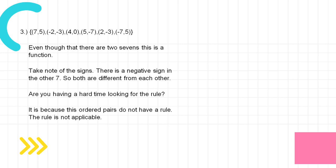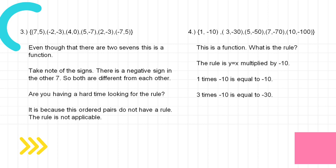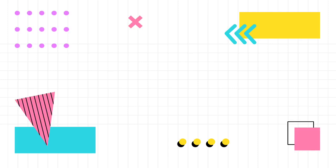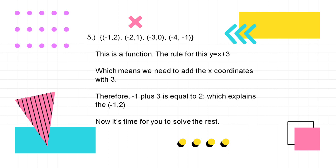Here is our fourth example. This is a function. The rule is y equals x multiplied by negative 10. 1 times negative 10 equals negative 10, which explains (1, negative 10). 3 times negative 10 equals negative 30, which explains (3, negative 30). And so on. For the last example, this is a function. The rule is y equals x plus 3, meaning we add 3 to the x-coordinate. Therefore, negative 1 plus 3 equals 2, which explains (negative 1, 2).